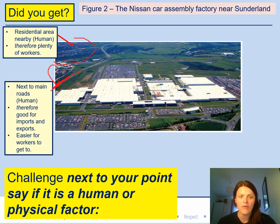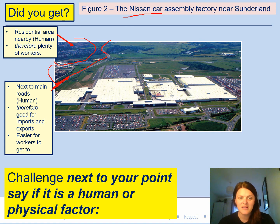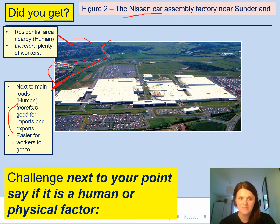The next one — there's a main road here. Why would a main road be a good thing to have near your factory? Well, obviously after you've made your products — in this case, all the Nissan cars — you can load them onto those massive lorries and drive them around the country or even overseas to sell them. So it's good for imports and exports — bringing stuff into the factory and taking stuff out again — and it's really easily connected. Also, it's easy for workers to get to.